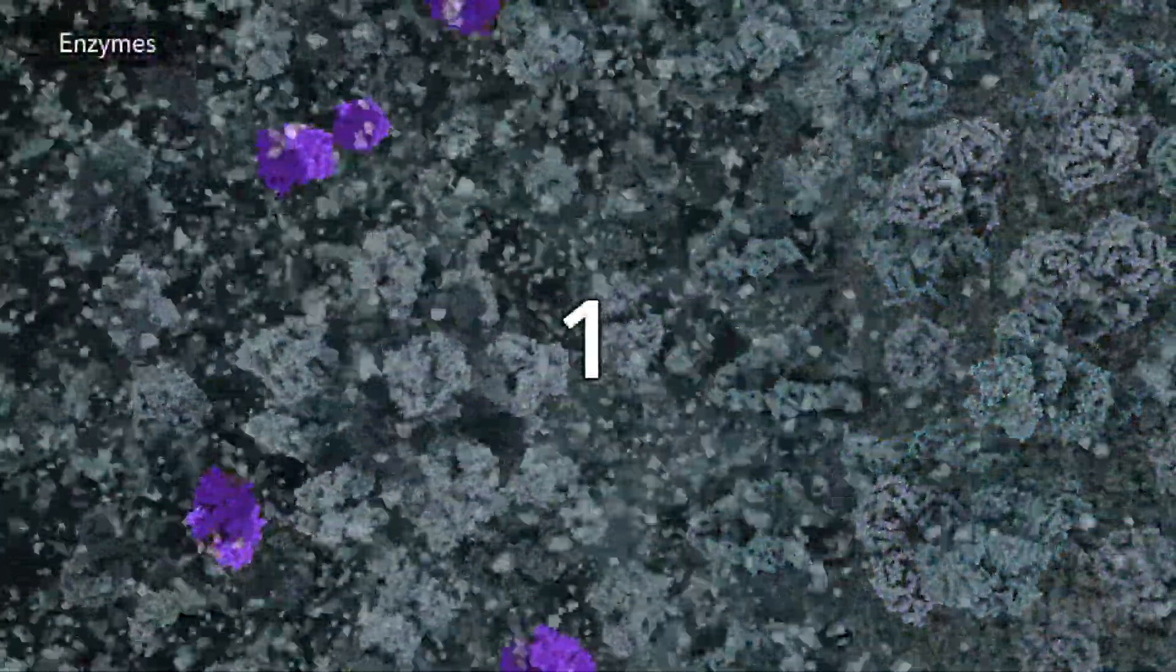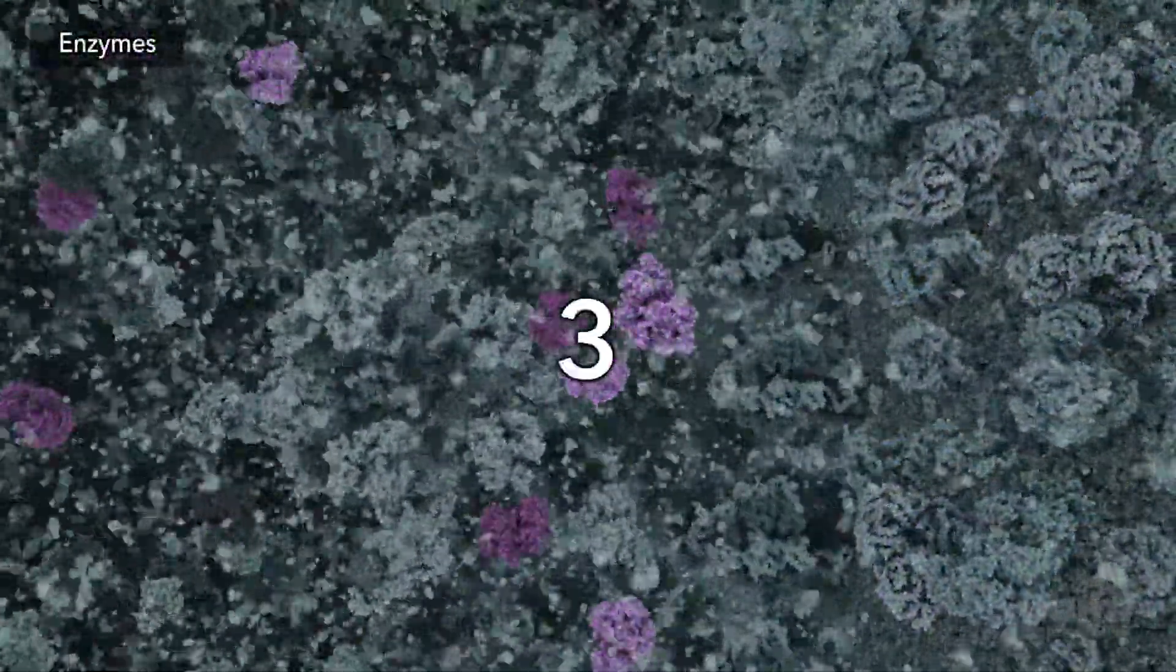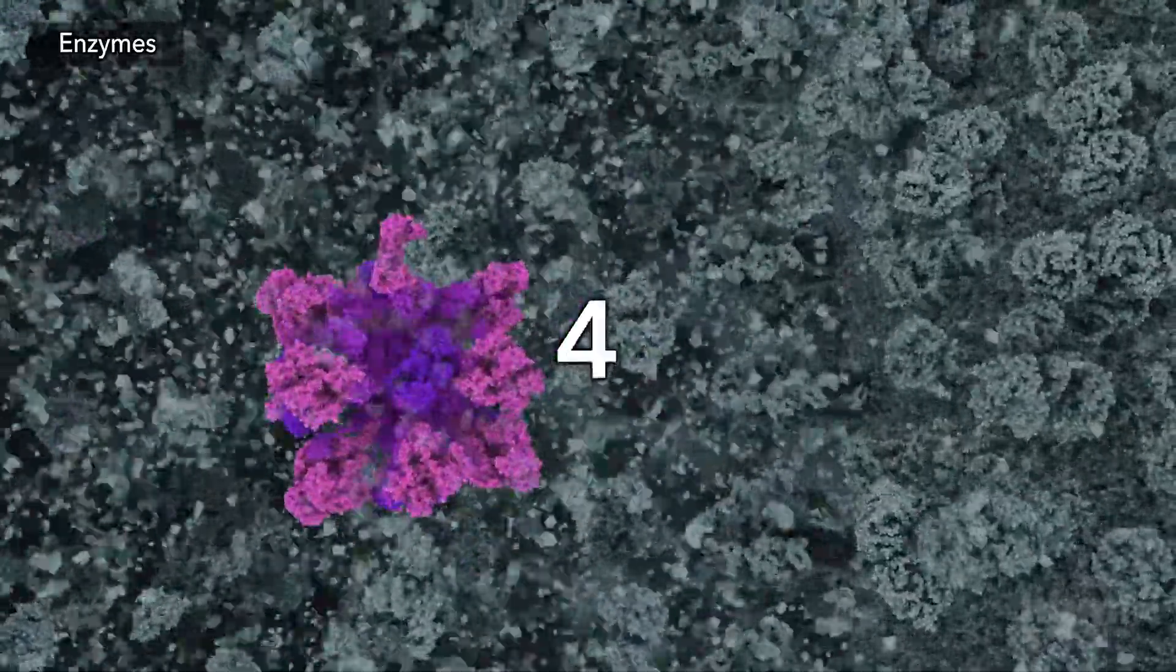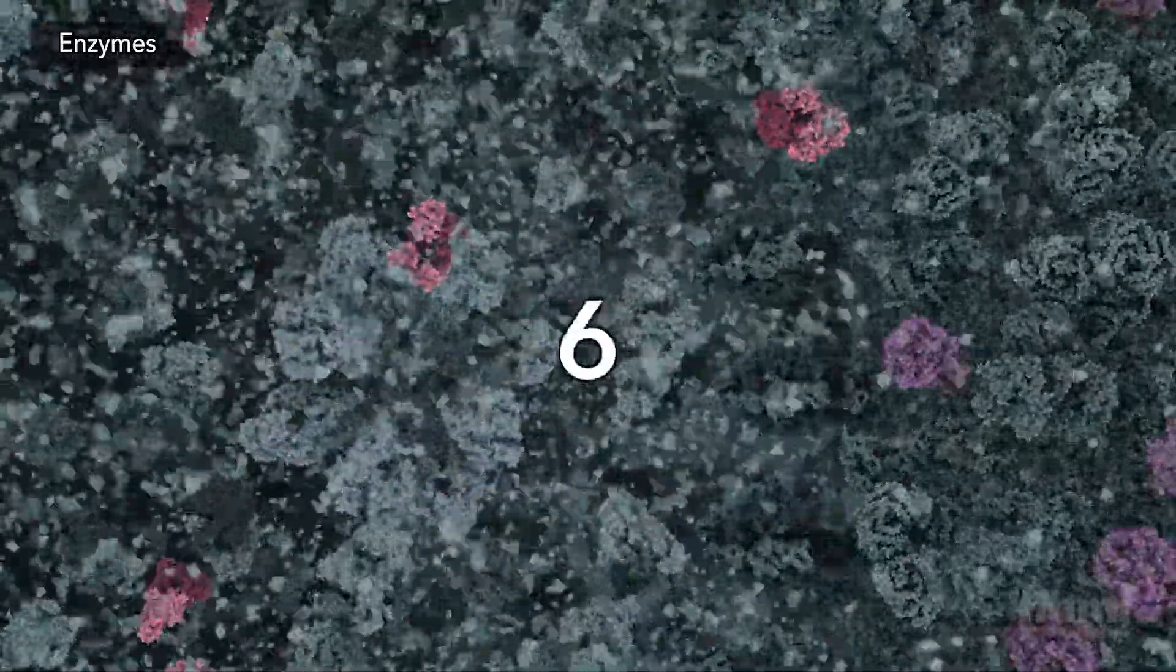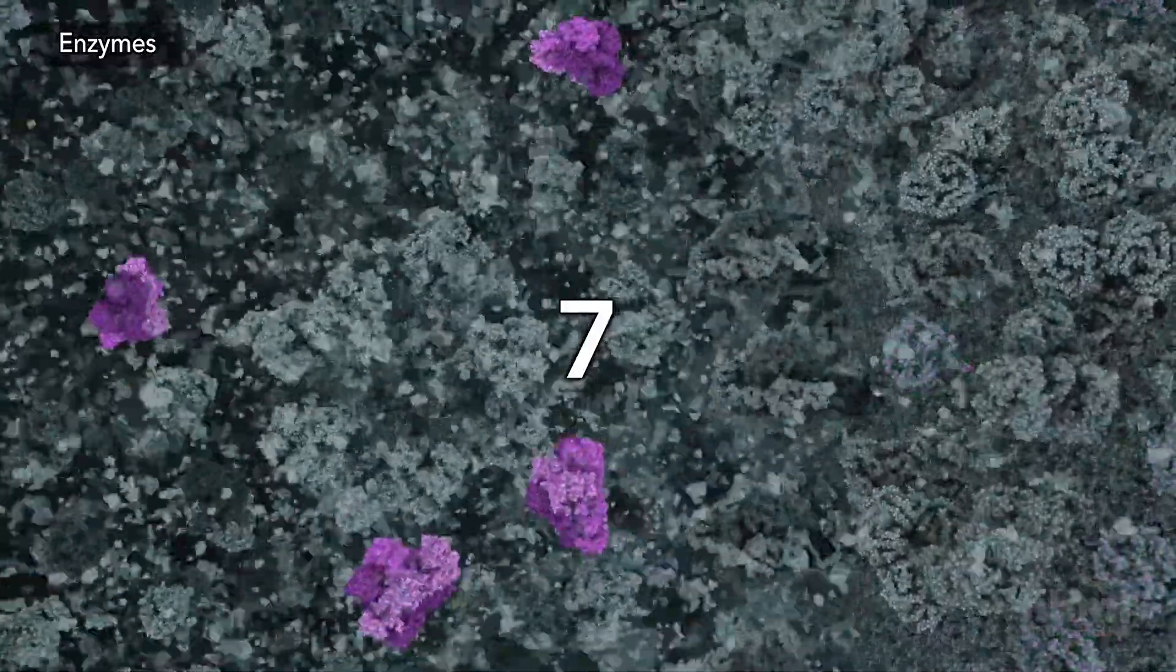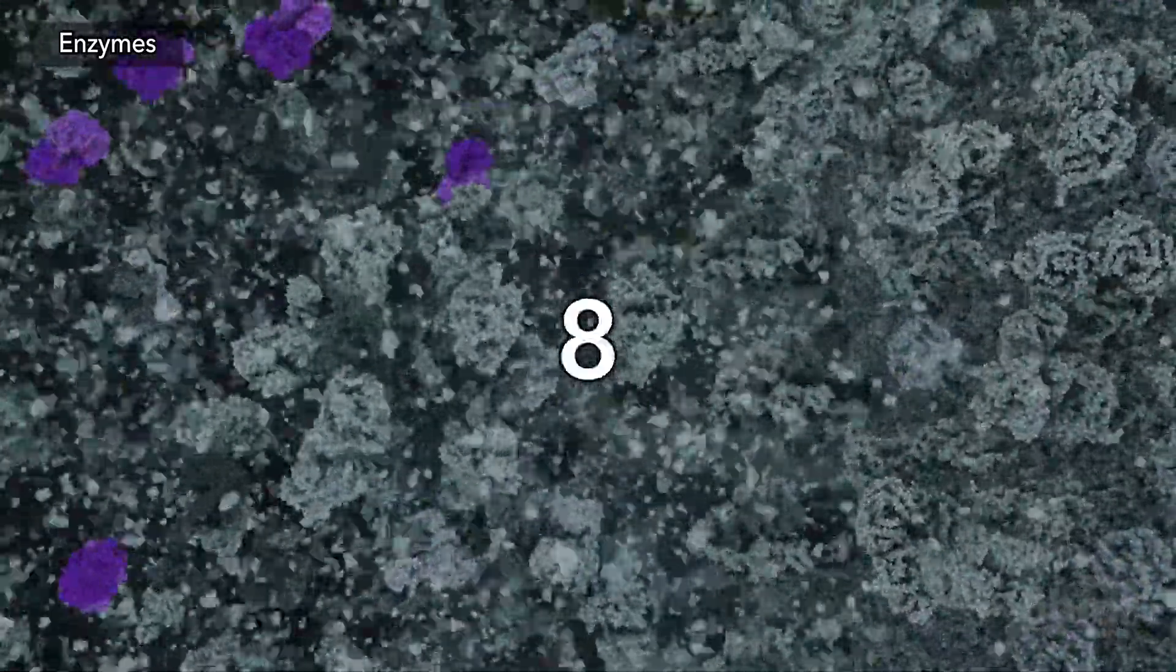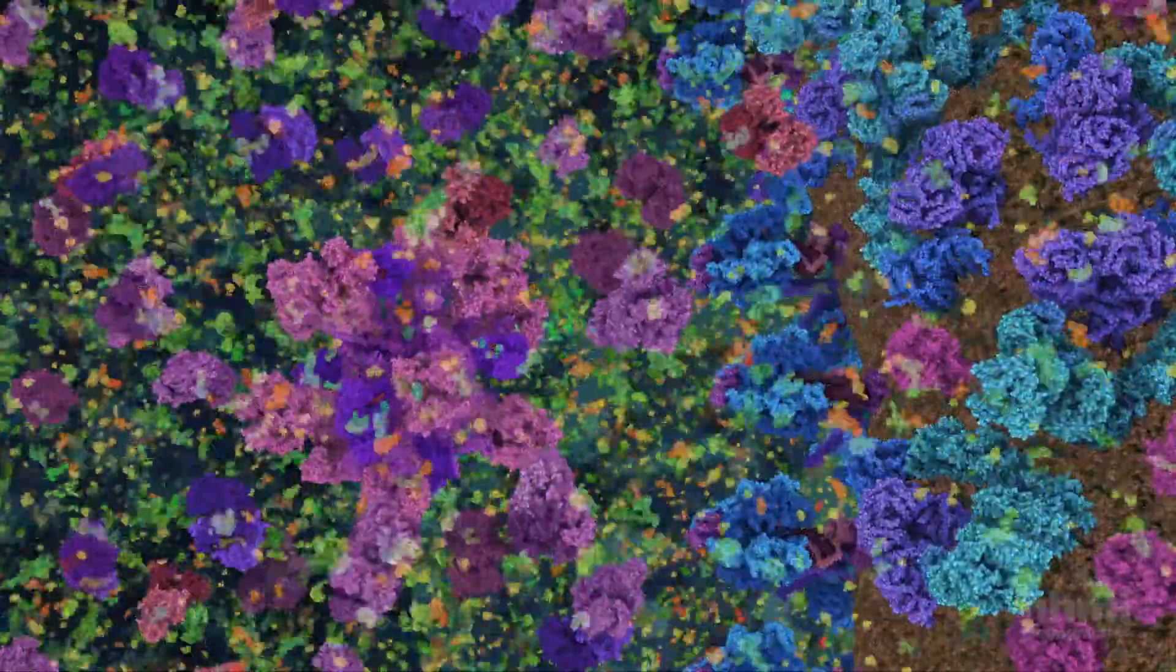The eight steps of the citric acid cycle gradually break apart two carbon atoms from glycolysis, capturing liberated electrons for the electron transport chain while generating carbon dioxide as waste.